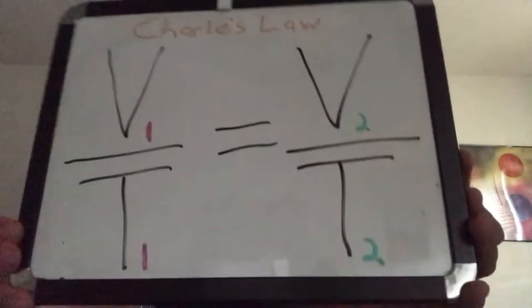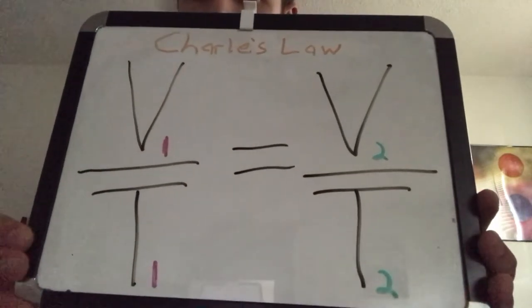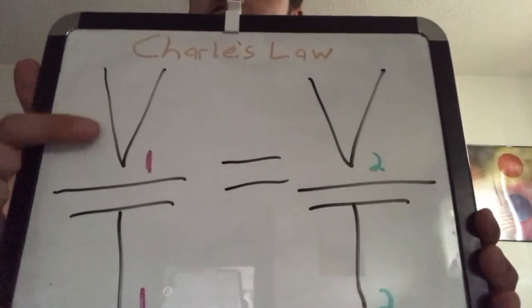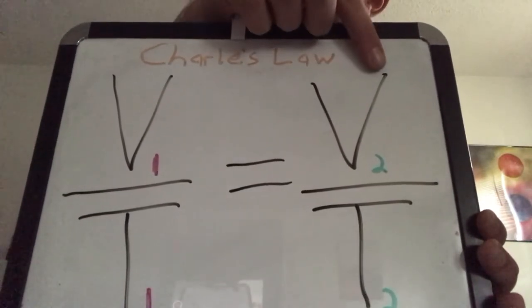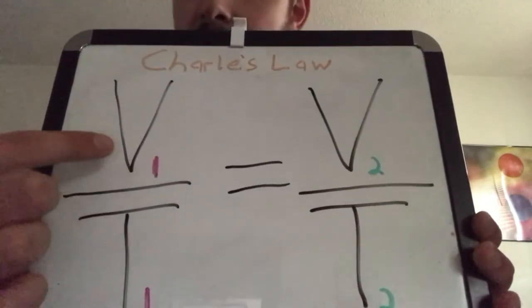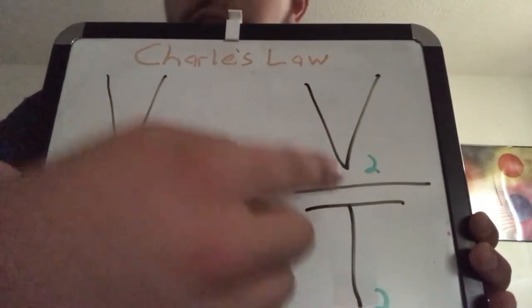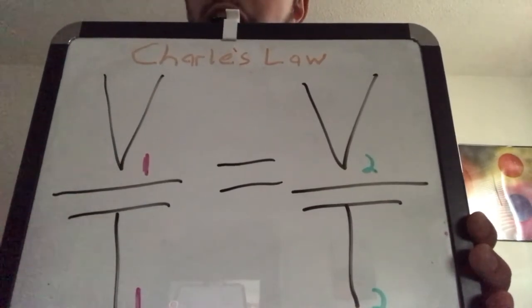One of the gas laws we read about was Charles' Law. As a reminder, Charles' Law says that V1 over T1 equals V2 over T2. This is something you're definitely going to want to have down in your notes. What this means is that the initial volume over the initial temperature is equal to the final volume over the final temperature. You could write VI for V-initial and VF for V-final. It's just important that you know that one side of the equation has the initial values, and the other side has the final values.